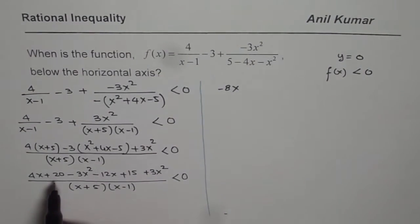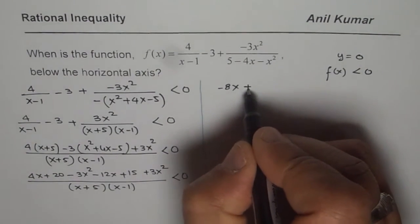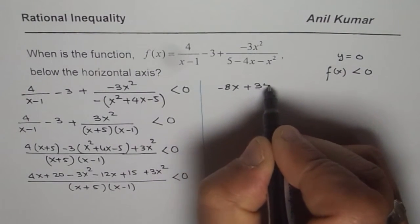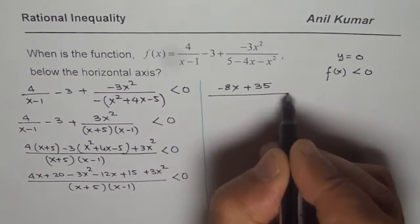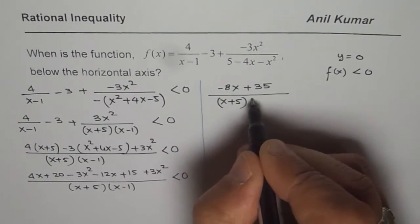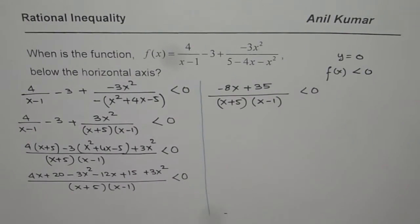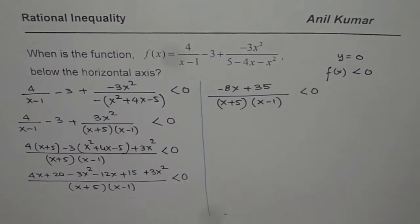As far as the numbers are concerned, we have 20 plus 15, which is 35. So we have plus 35 over x plus 5 times x minus 1, less than 0. So that is what we get at this stage.